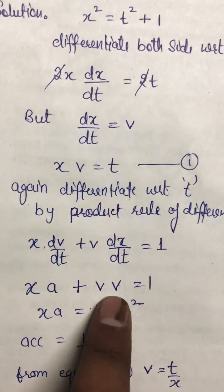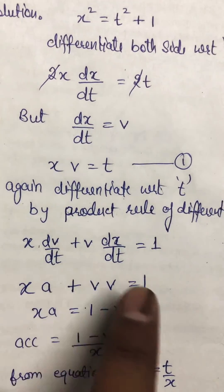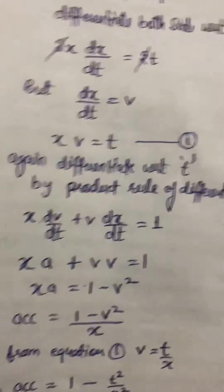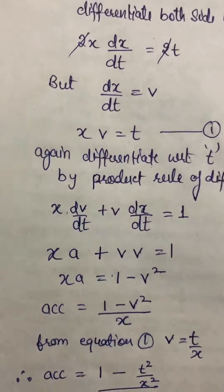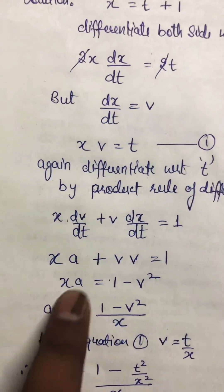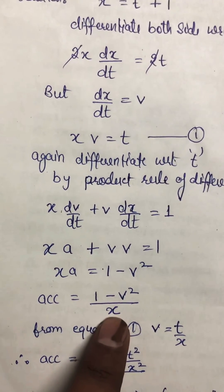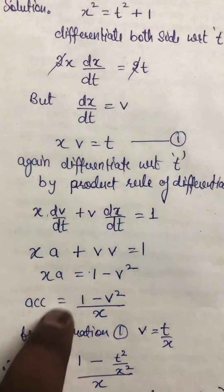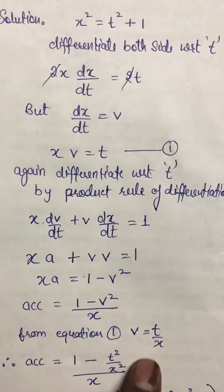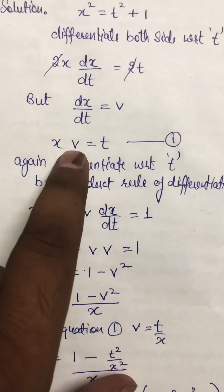Since rate of change of velocity is acceleration, and dx/dt = v, we get x·a = 1 − v². Therefore acceleration a = (1 − v²) / x. From equation 1, v = t/x.